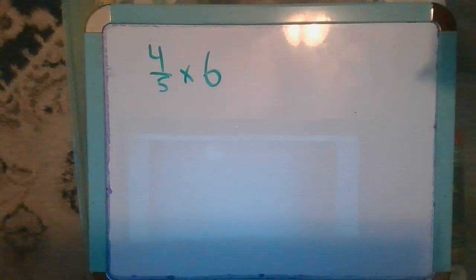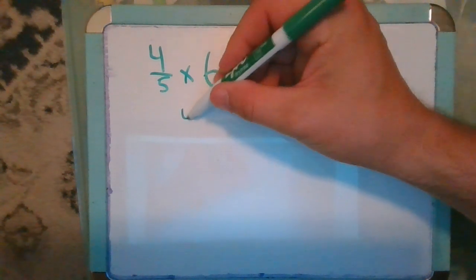All right, let's give it one more shot to make sure this actually holds true. So I have four-fifths times six. That means I want six groups of four-fifths, or four-fifths of a group of six, but that sounds much harder. So four-fifths six times.